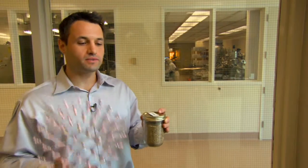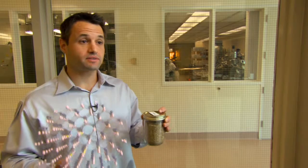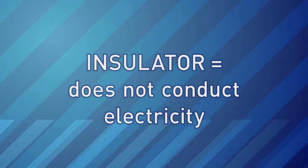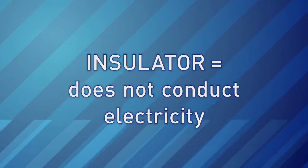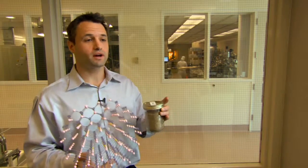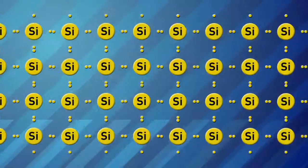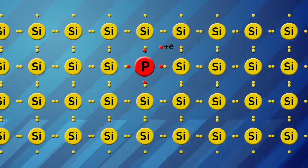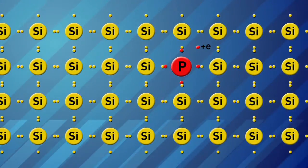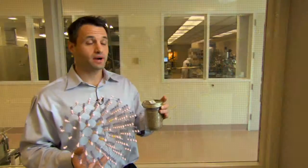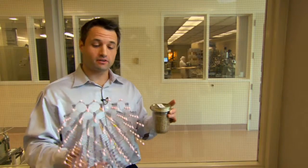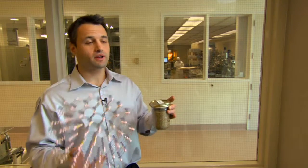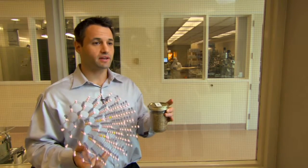One interesting property of silicon is that it's a really good insulator, meaning it doesn't conduct electricity. If you put little impurities — replacing one of these atoms with a different impurity — it will conduct a little bit of electricity. Adding those impurities turns silicon into a semiconducting material. If you apply an electric field across this, it will conduct or not conduct, very much like a switch.